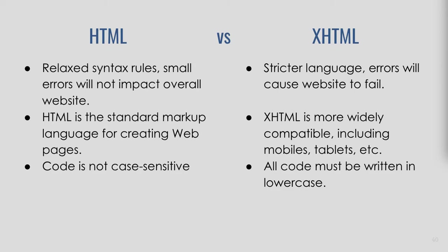You can use web browsing software that isn't as powerful. Therefore your TVs, mobile phones, PlayStations, and all sorts of devices can run websites using XHTML — much more widely compatible. To increase efficiency when using XHTML, it requires that your code is written in lowercase. You cannot use uppercase markup in XHTML documents.